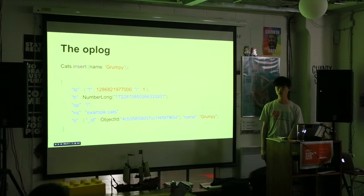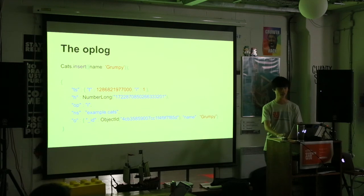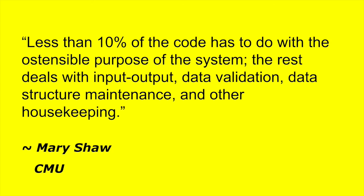The reason it's important for us is it reduces the code bloat of your application. A lot of the code we write will be trying to manage data change and trying to propagate those results throughout the entire application. Meteor found a way to abstract all of that. Mary Shaw said most of the code we write isn't actually targeting what we want to achieve, it's making sure that we can get there.